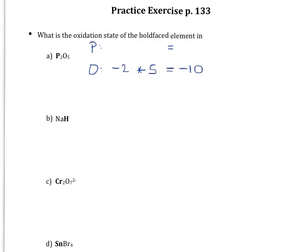Notice that the oxidation numbers are written differently from charges — we would write the charge as two minus, but we write this oxidation state as minus two. Working backwards, since this is a neutral compound, the oxidation numbers need to add to zero, which means the oxidation state for the phosphorus atoms needs to be plus ten. Since there are two phosphorus atoms, each phosphorus atom needs to have an oxidation state of plus five. So the oxidation state of phosphorus is plus five and the oxidation state of oxygen is minus two.